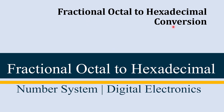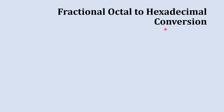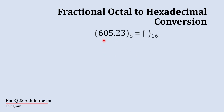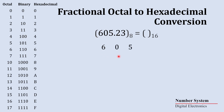Fractional octal to hexadecimal conversion is a four-step process. Our octal number is 605.23, which we are going to convert into a hexadecimal number using the octal to hexadecimal conversion table. First, we will take the whole number part, 605, and convert it into a hexadecimal number.